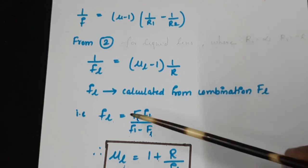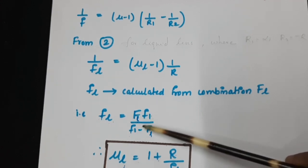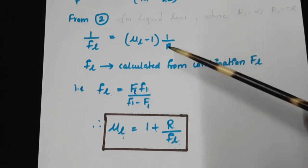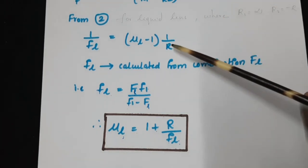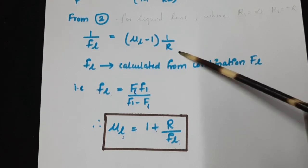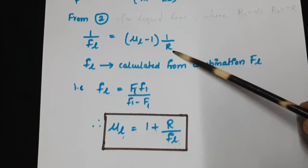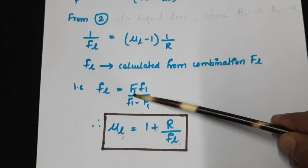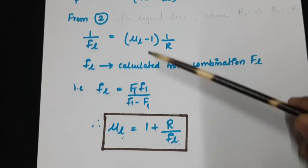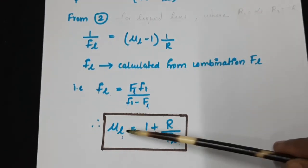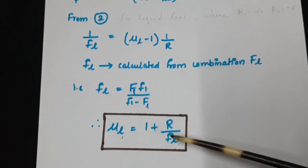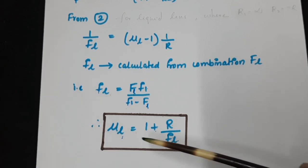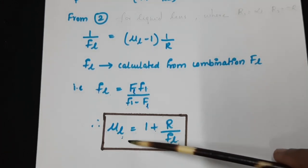By the relation fl = FL·f1 / (f1 - FL), now that the radius of curvature R is already found out with the help of a liquid of known refractive index (water), and fl the focal length of this liquid lens is also calculated, on rearranging the equation we can get μl = 1 + R/fl, where fl is the liquid focal length and μl is the refractive index of the liquid. So both our aims are now accomplished.